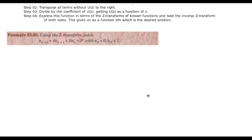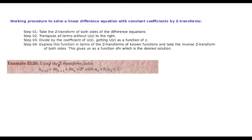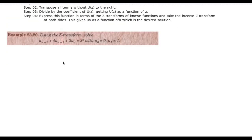We'll solve this problem: solve the difference equation U(n+2) + 4U(n+1) + 3U(n) = 3^n, with U(0) = 0 and U(1) = 1. If you concentrate right now on the steps I've mentioned, it's not going to be a difficult job to follow.